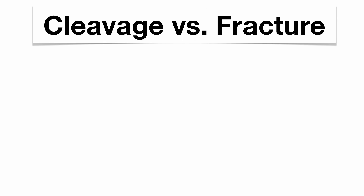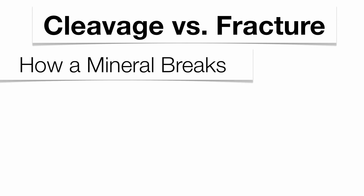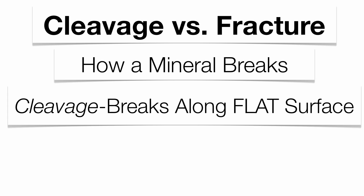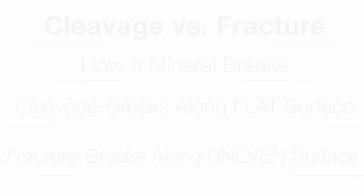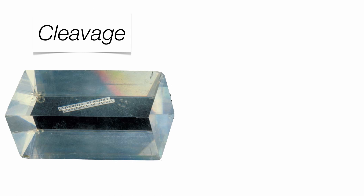That leads us to the way a mineral is going to break. You have two different ways: if a mineral breaks along a flat surface, it's what we call cleavage; if it breaks along an uneven surface, it's called fracture. Here you can see calcite, which has a really nice flat surface on a multitude of sides.